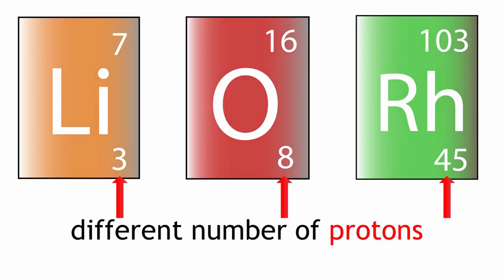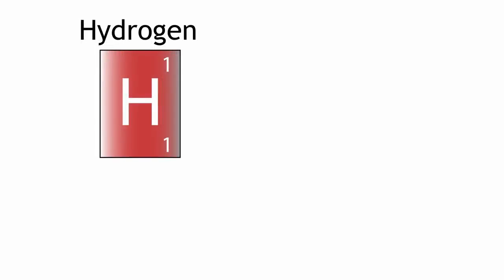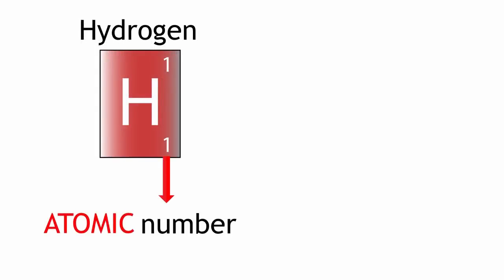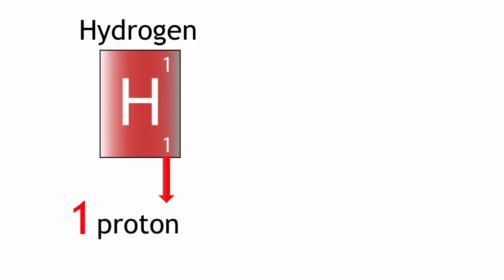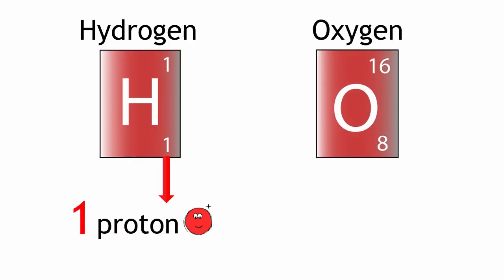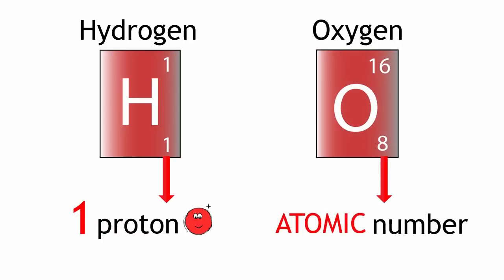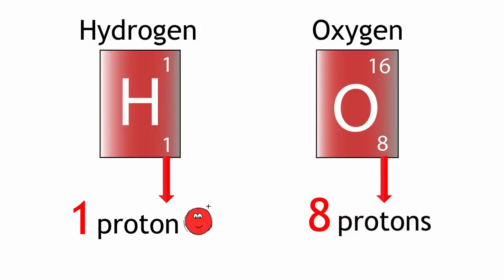For example, an atom of hydrogen has an atomic number of 1 because it has one proton, but an atom of oxygen has an atomic number of 8 because it has 8 protons.